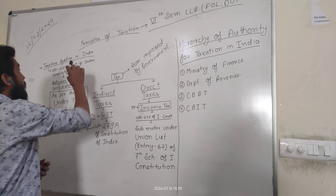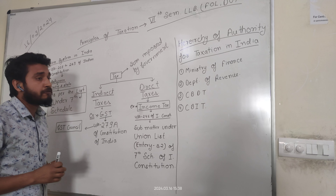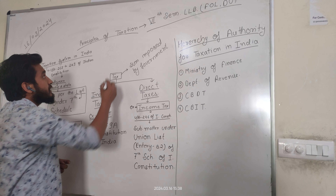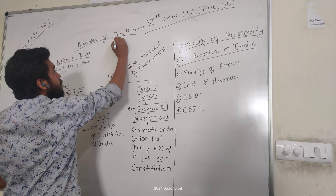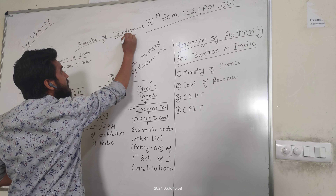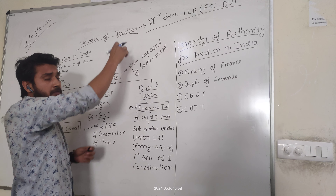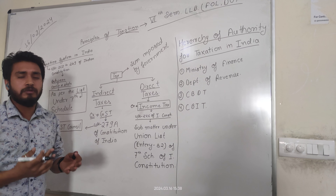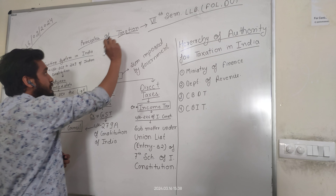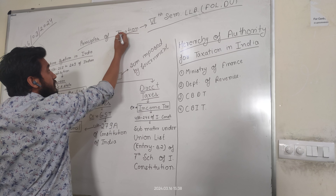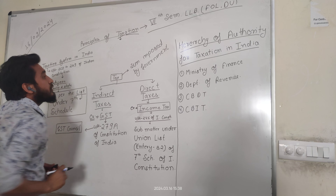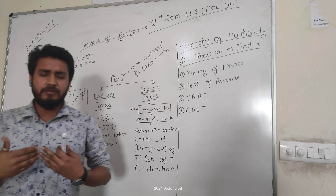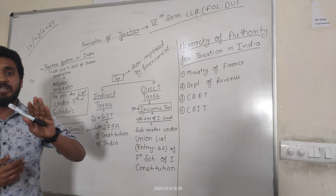If we look into the topic — Principles of Taxation — first we have to know about what is Taxation. In the word 'Taxation' we can break it into two parts: 'Tax' and an action, meaning Tax is an action imposed by an authority. Tax is a sum imposed by a competent authority.